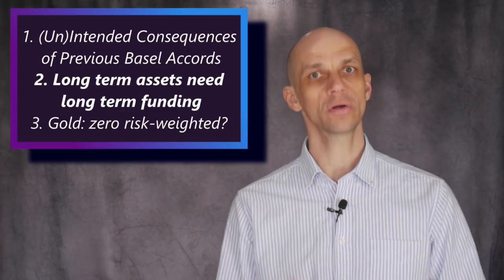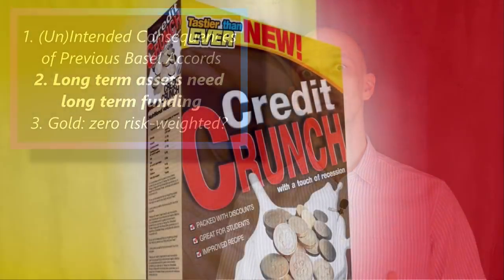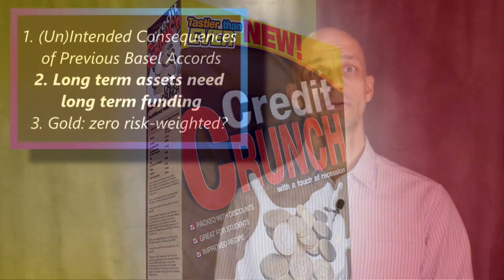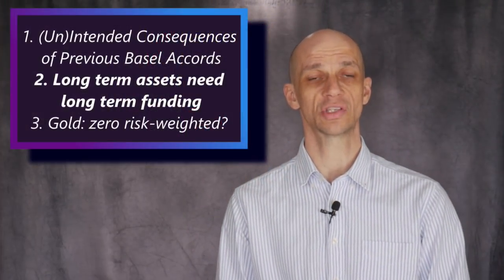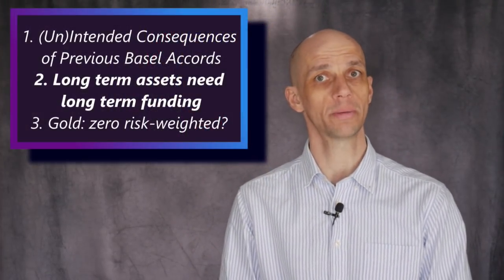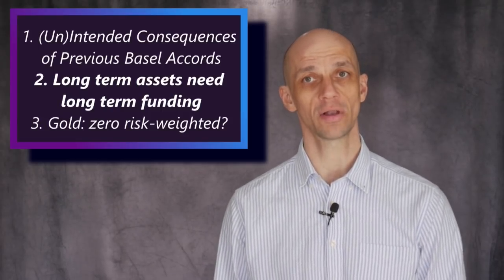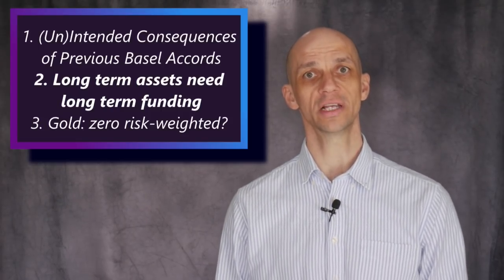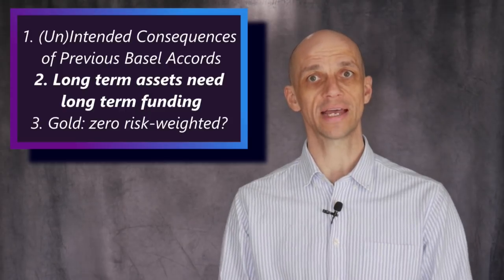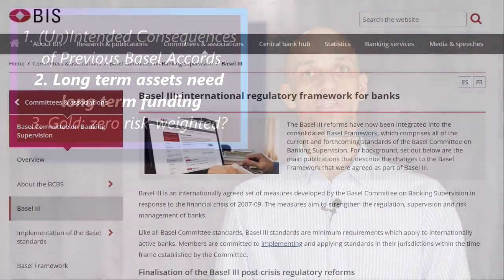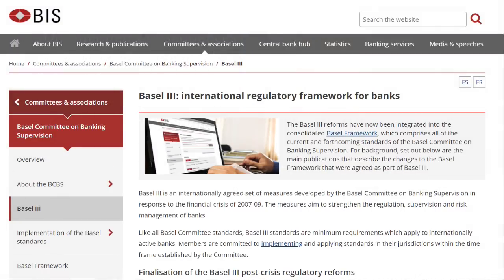When markets are under stress, those markets often tighten. By setting a net stable funding ratio, it requires banks to finance long-term assets with long-term money. This is meant to encourage banks to carefully manage their risks. Different assets are given different risk weightings according to the percentage of stable funding needed to finance them.